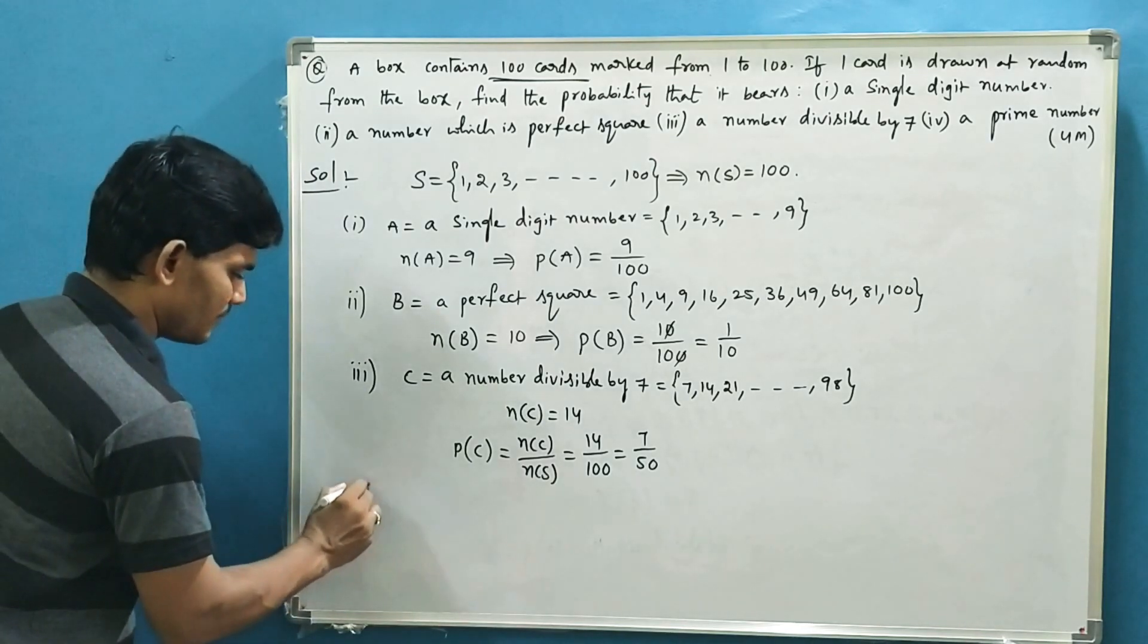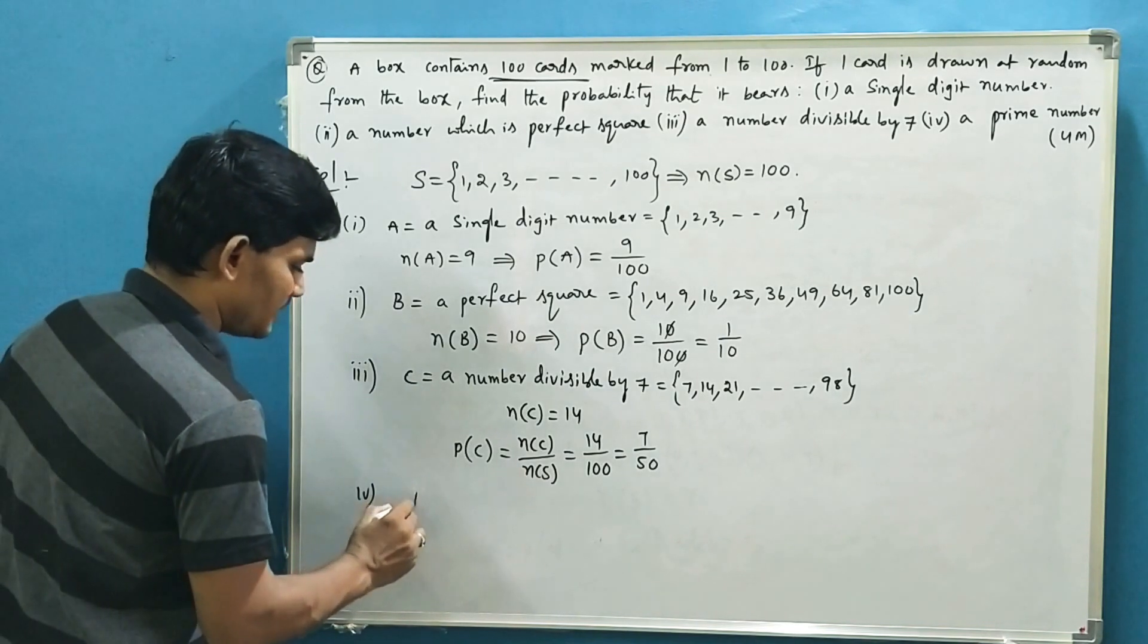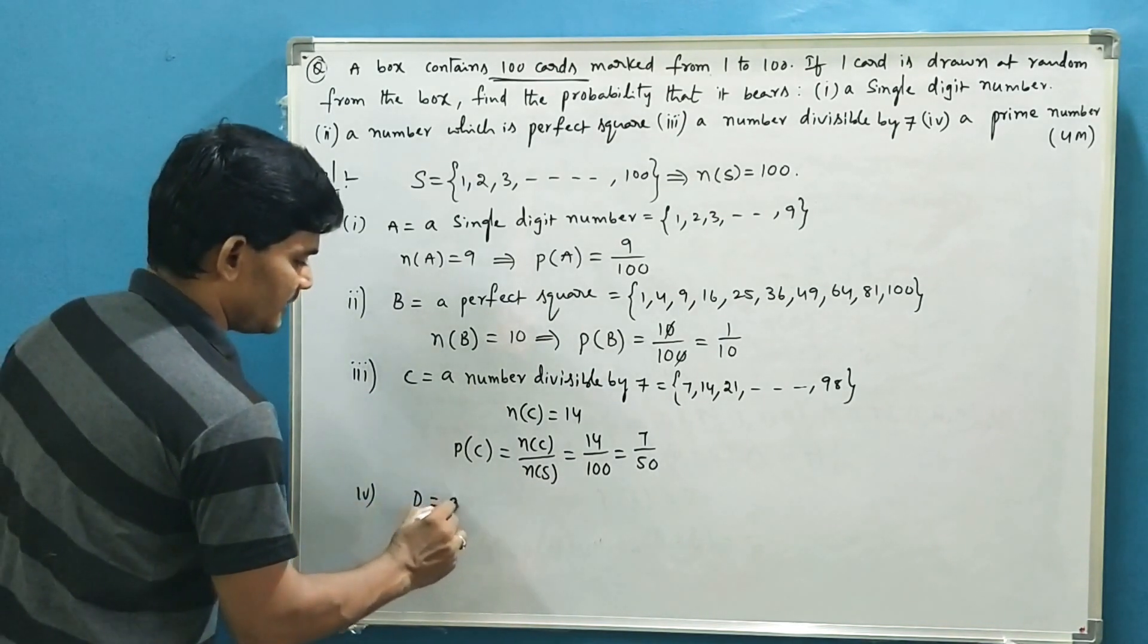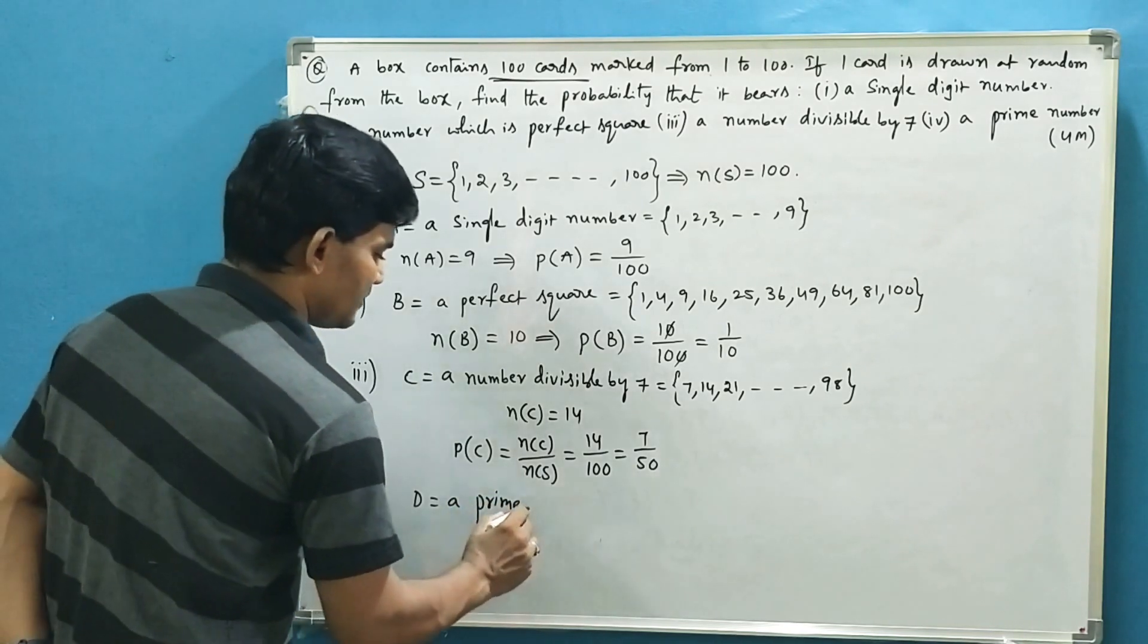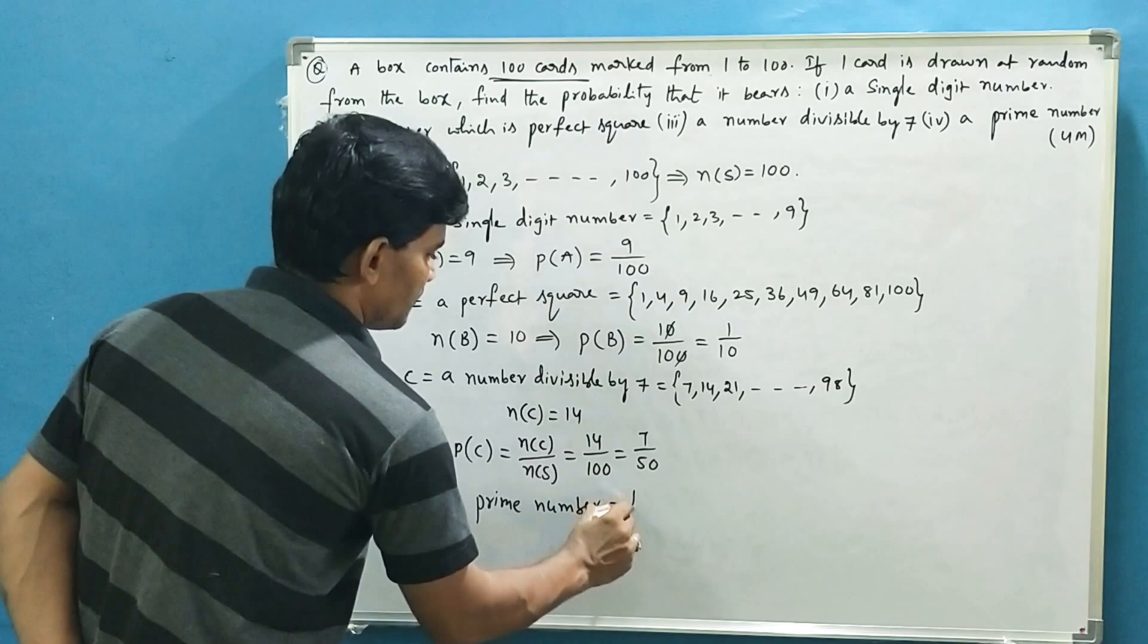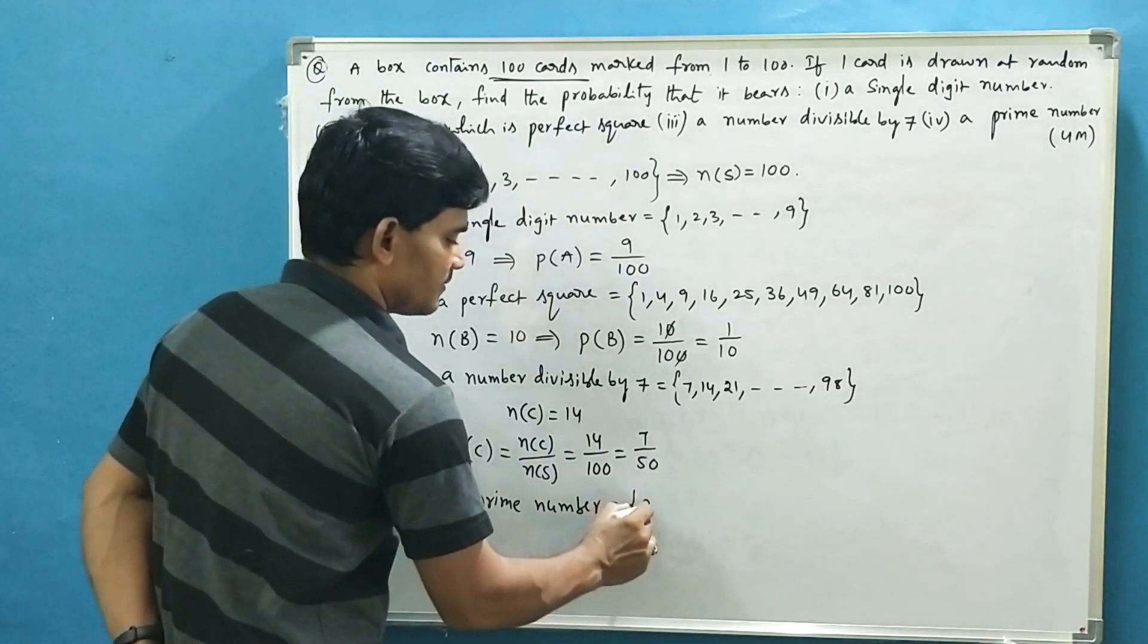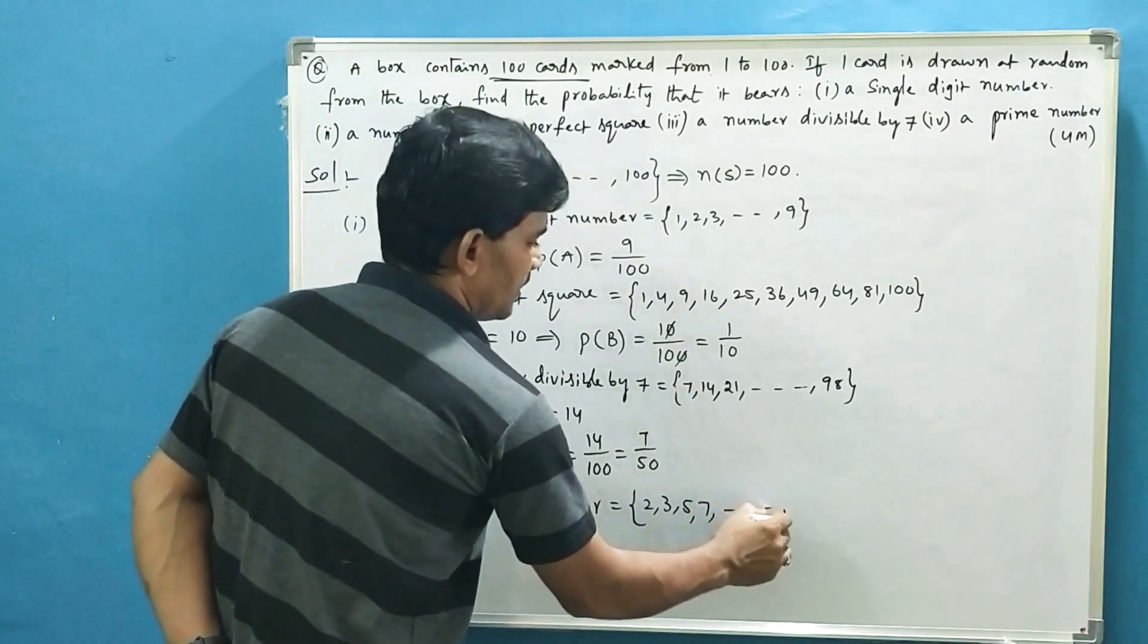And the fourth one is a prime number. Let the event be D, the event of getting a prime number from the cards. As you know, how many prime numbers are there? 2, 3, 5, 7, 11, 13. If you go on...